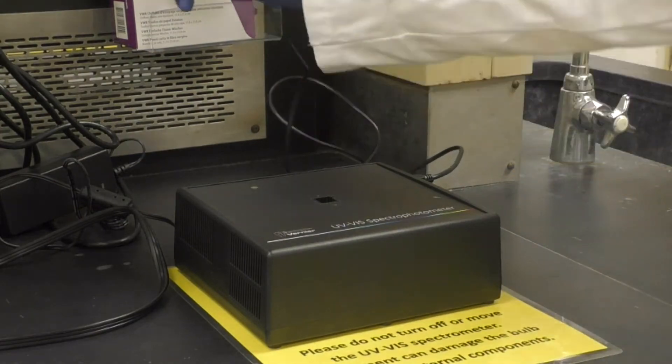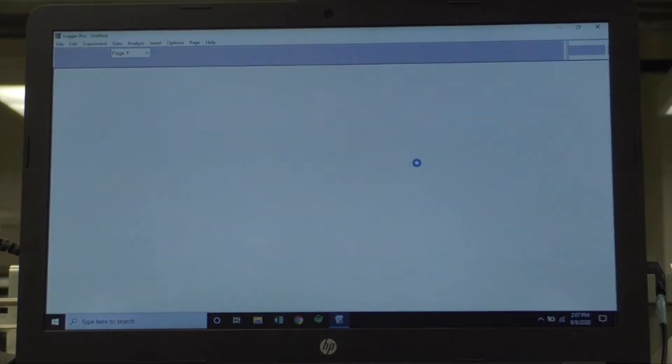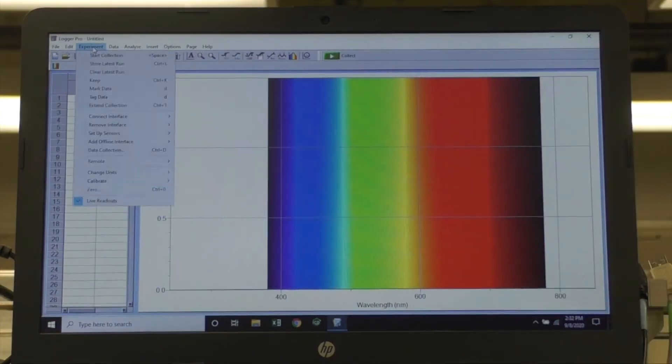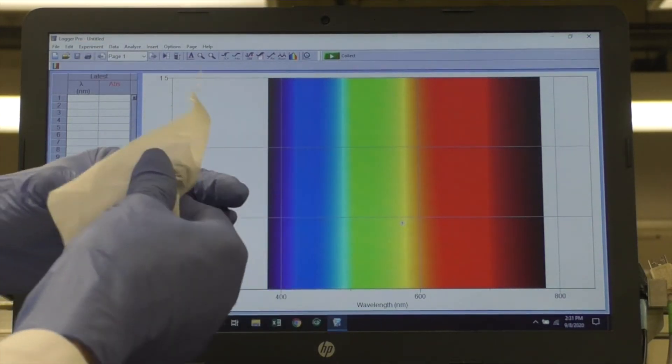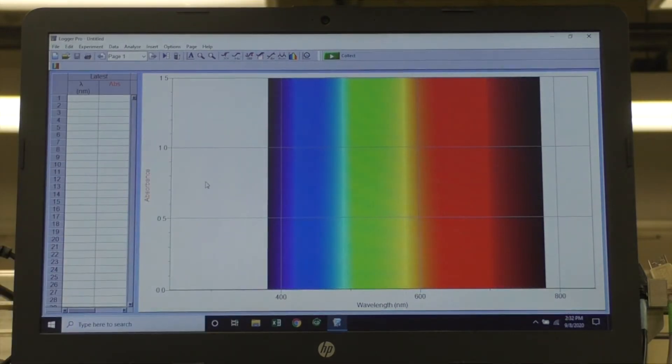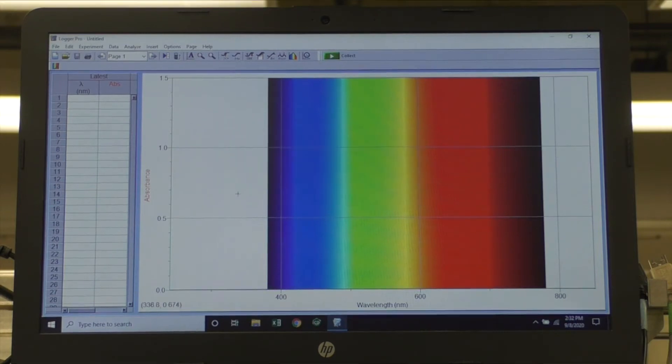Start by connecting the black USB cord from the UV-Viz spectrometer to your laptop and then opening up Logger Pro. Choose Experiment, Calibrate, Spectrometer 1. Using the prepared blank, wipe the cuvette and place it in the spectrometer with a clear side facing forward. Since the spectrometer is left on, click Skip Warm Up, Finish Calibration, and then OK or Done. Remember to put the blank back in your patient block.